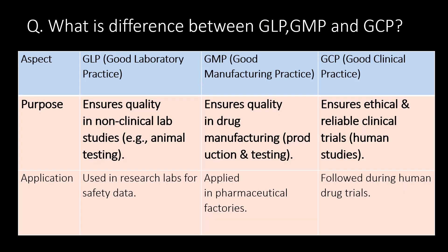A very common question: what is the difference between GLP, GMP, and GCP? You can refer to the table below to differentiate between them. GLP (Good Laboratory Practice) ensures quality in non-clinical lab studies, GMP (Good Manufacturing Practice) ensures quality in drug manufacturing, and GCP (Good Clinical Practice) ensures ethical and reliable clinical trials.